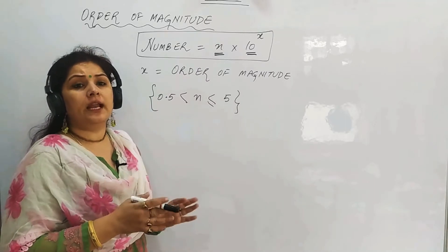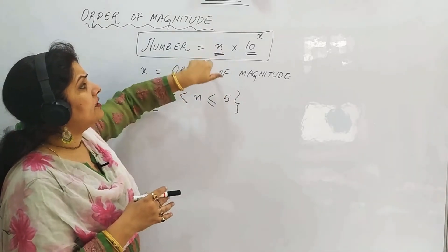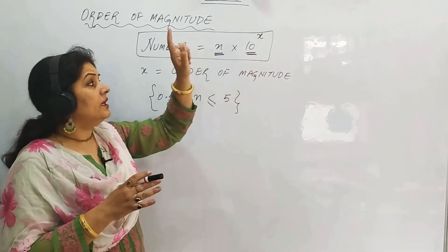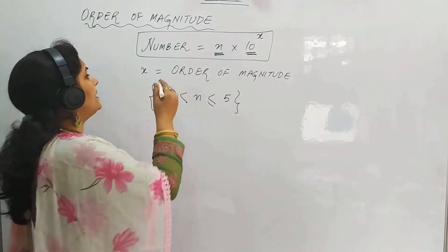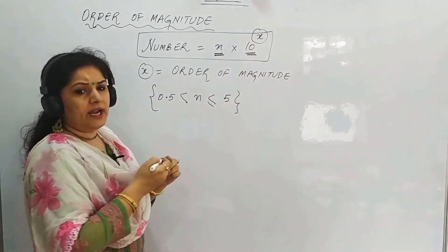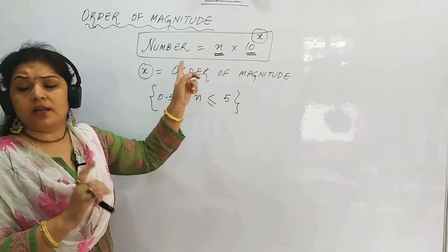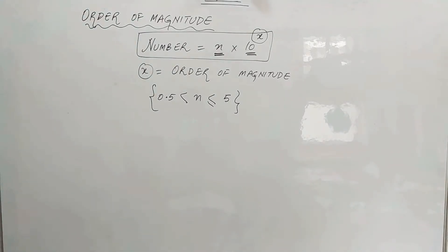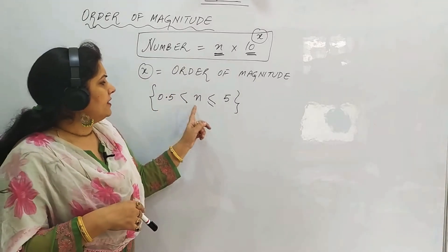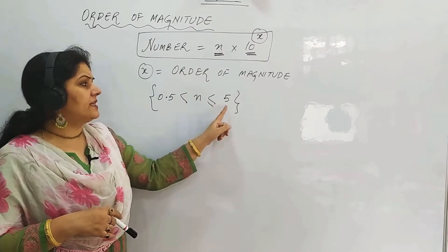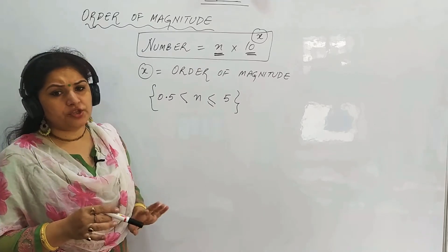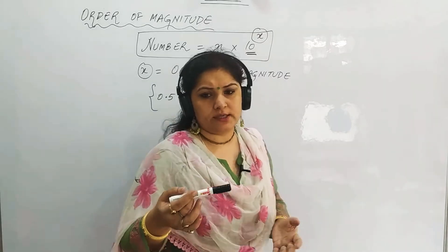To calculate order of magnitude, we always write the number in the power of 10. We convert the number to power of 10 form, and after converting, this x is our answer. And this number should lie in the range of 0.5 to 5 — greater than 0.5 and less than or equal to 5. Once we solve some questions, you will understand it better.